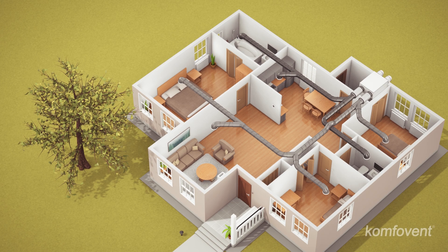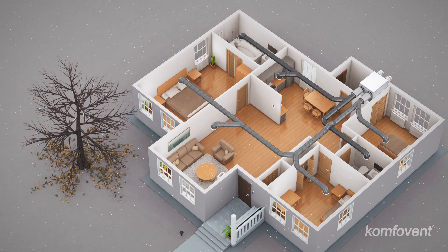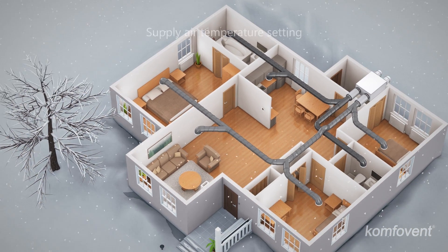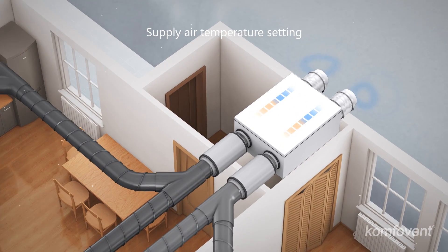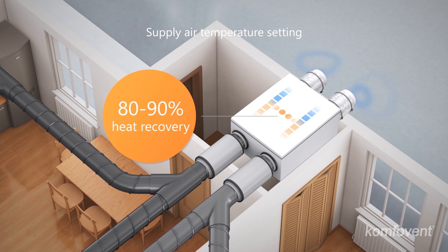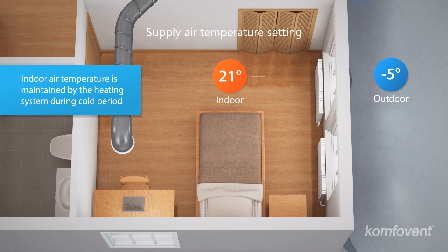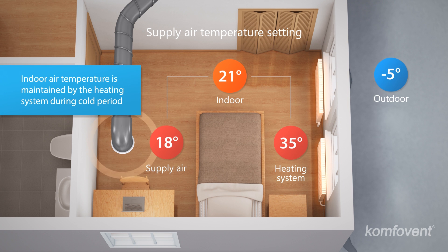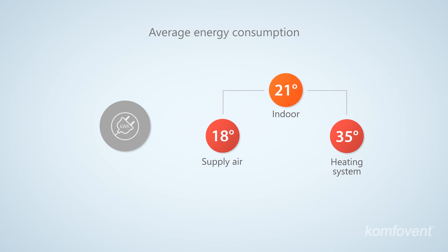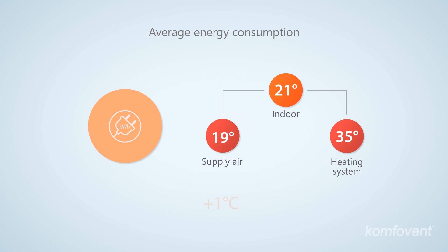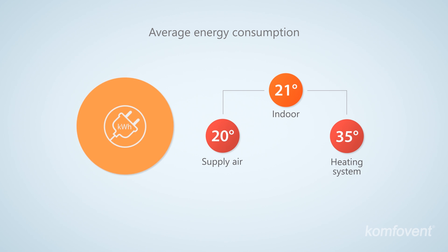The power consumption of the ventilation system directly depends on the air temperature settings. When choosing the air supply temperature, it is important to remember that the air handling unit recovers 80 to 90 percent of heat. The air supply can be additionally heated with an electric heater. However, a one degree increase in the air supply temperature raises energy consumption on average by a quarter. Smart control allows you to manage the operation of the electric air heater.